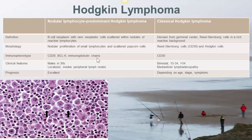The disease is mostly found in males in their 30s. It is a localized disease involving peripheral lymph nodes, and prognosis is excellent. Classical Hodgkin lymphoma is derived from germinal center B-cells. It is characterized by Reed-Sternberg cells, or RS cells, in a rich reactive background, as shown in the image. The Reed-Sternberg cells express CD30 and have bilobed nuclei with distinct nucleoli. RS cells are diagnostic for classical Hodgkin lymphoma.